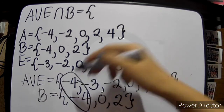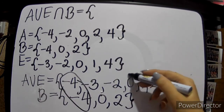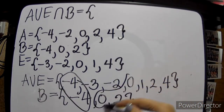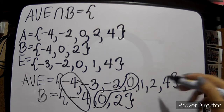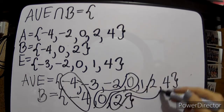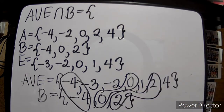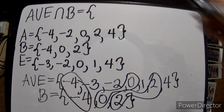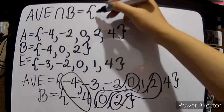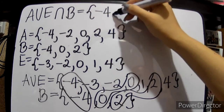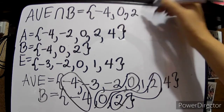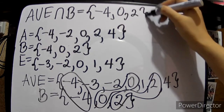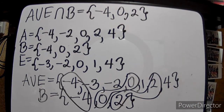Checking common elements: both have negative 4, both have 0, and both have positive 2. So the final answer — (A union E) intersection B — is {negative 4, 0, 2}.